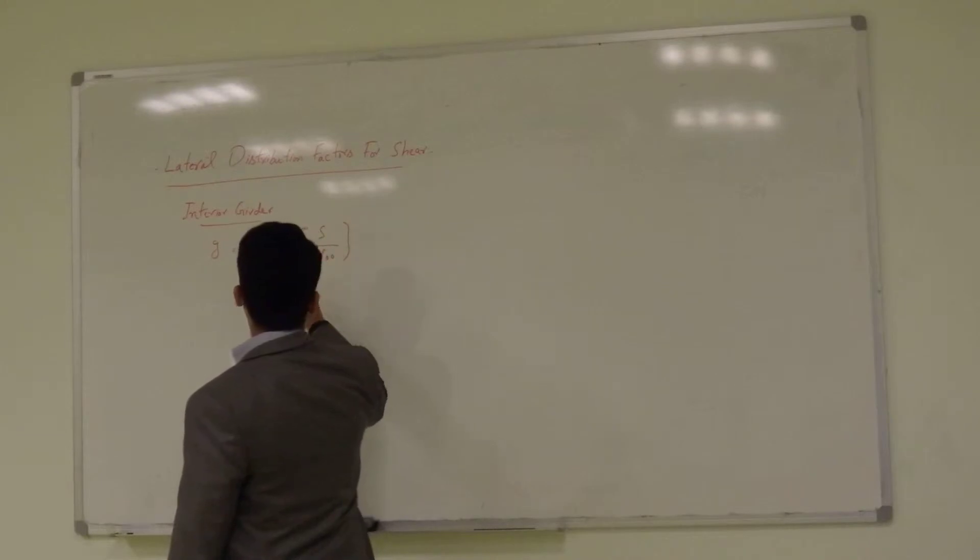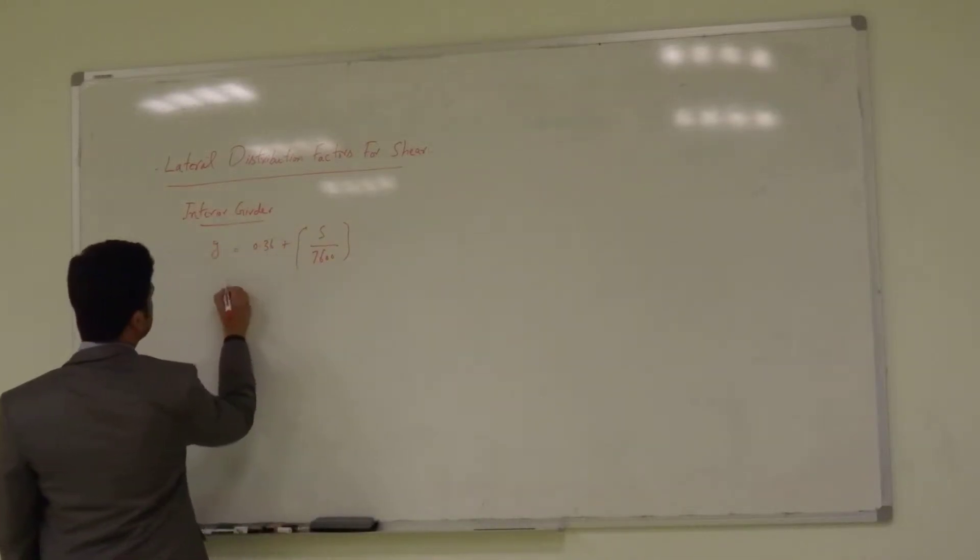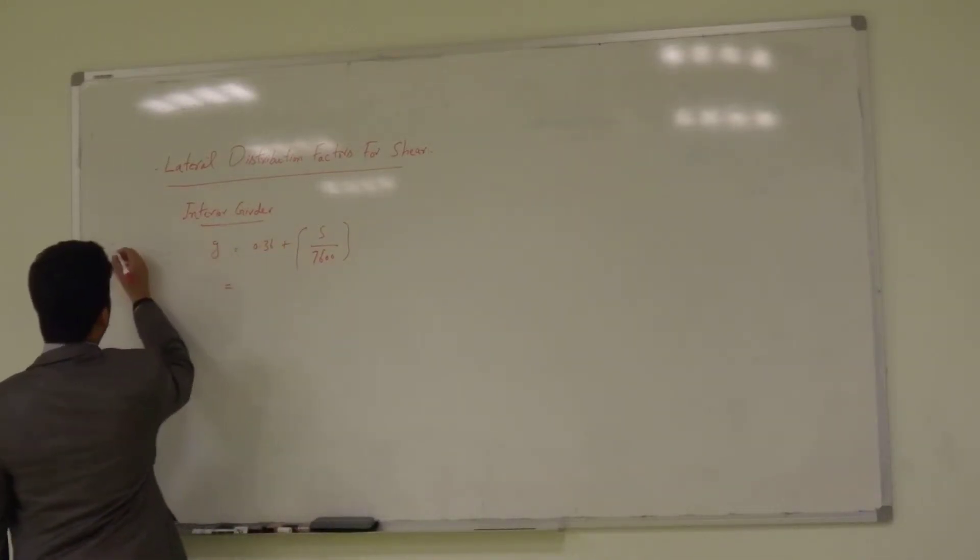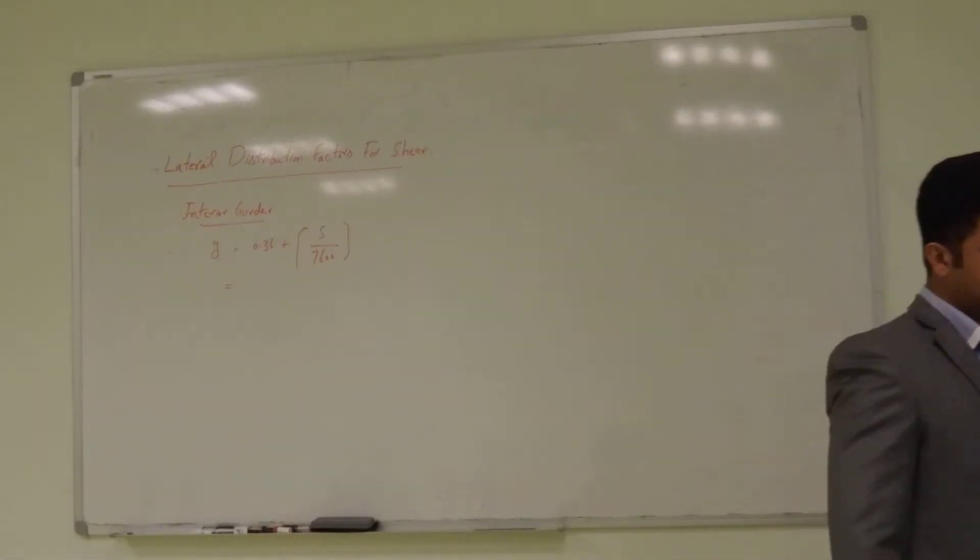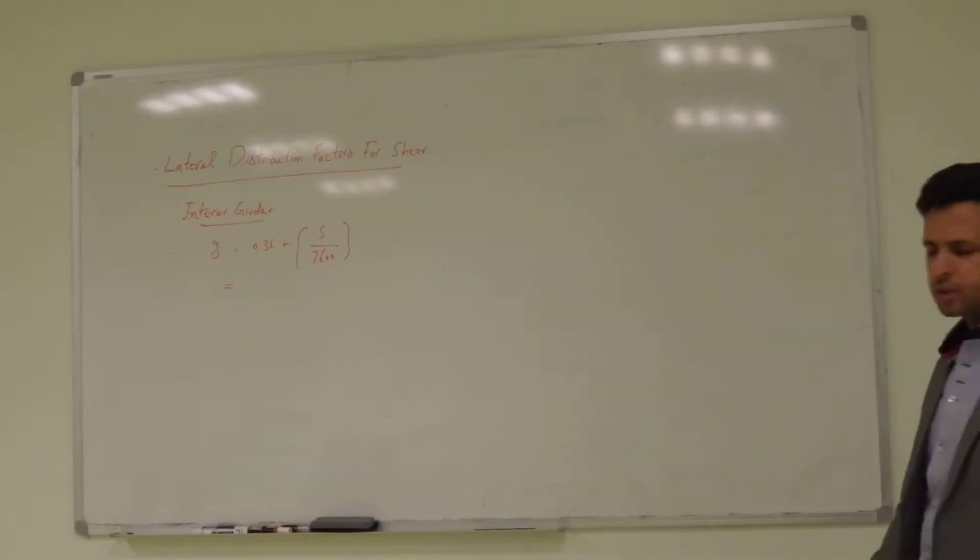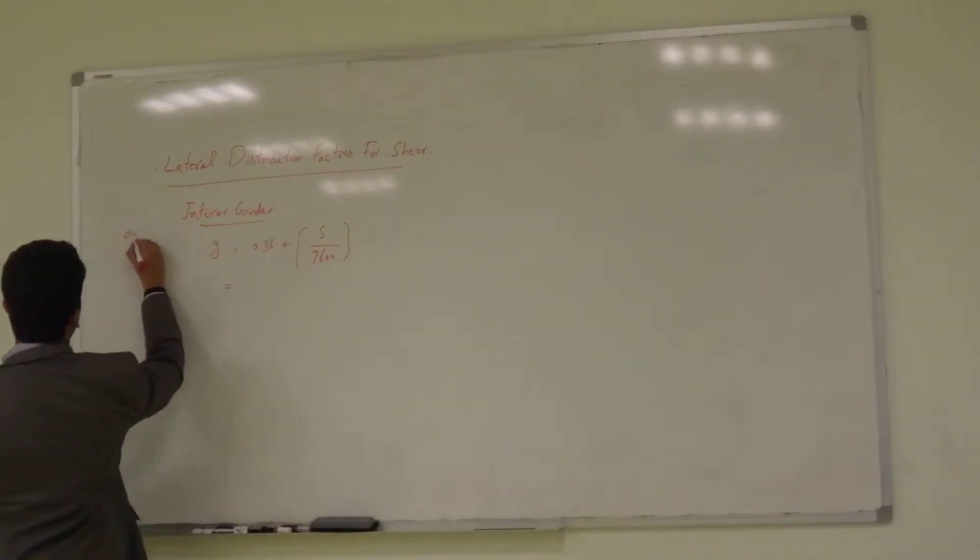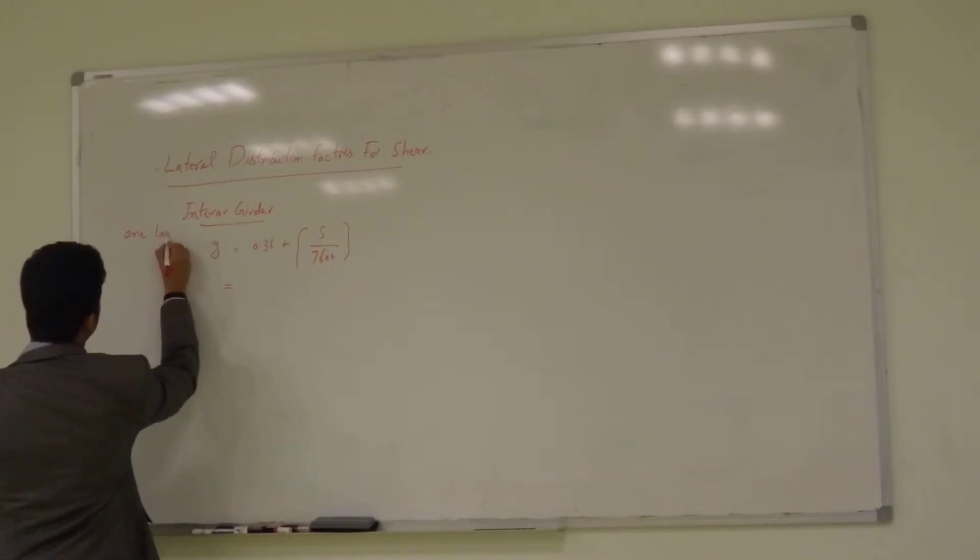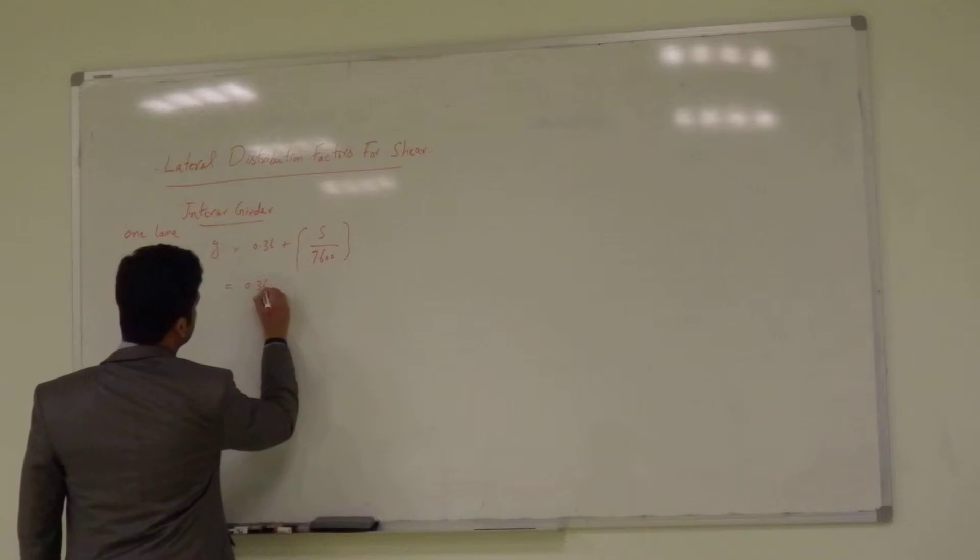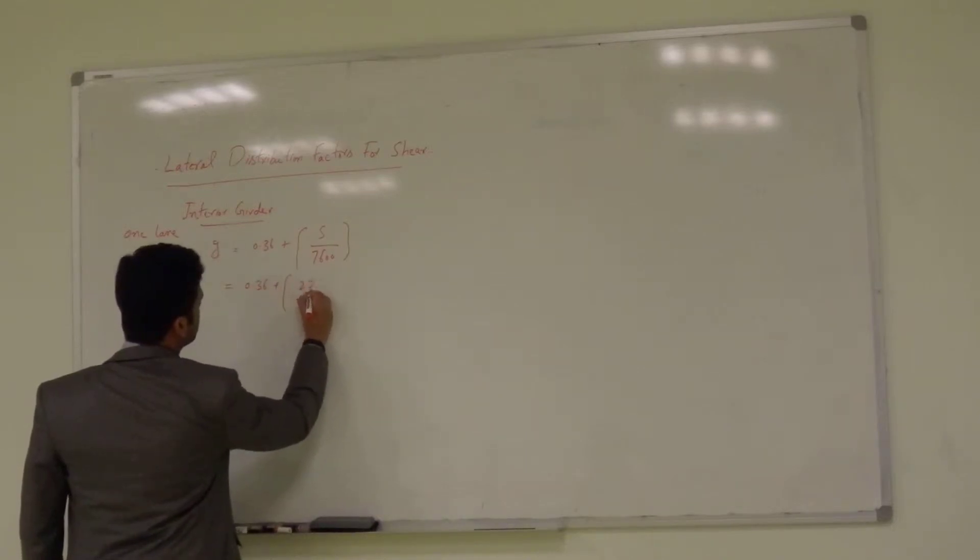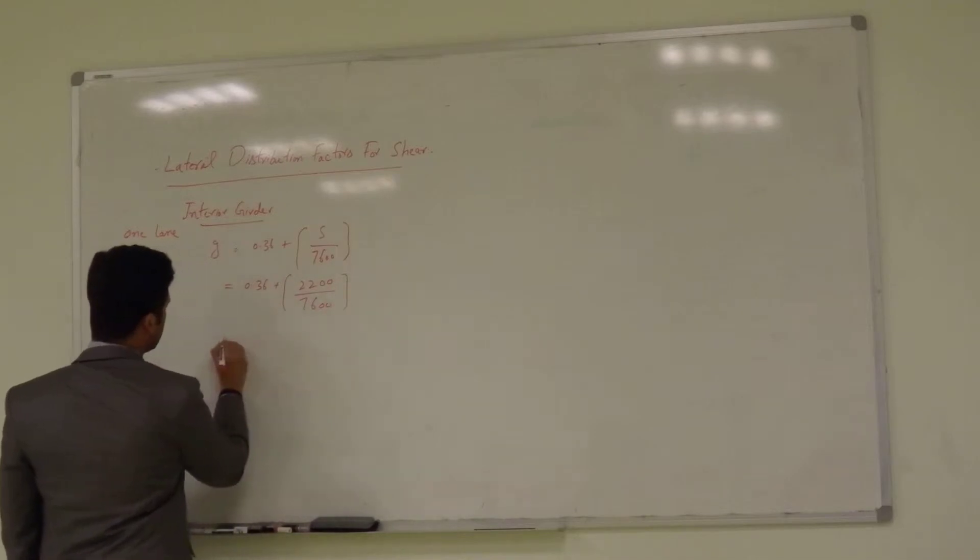So, what about S? S is the spacing of the girder. Just put the value. This is for the one lane loaded. This G equation is for how many lanes? It is for one lane loaded. One lane. So, just put the value 0.36 plus, what is the answer?